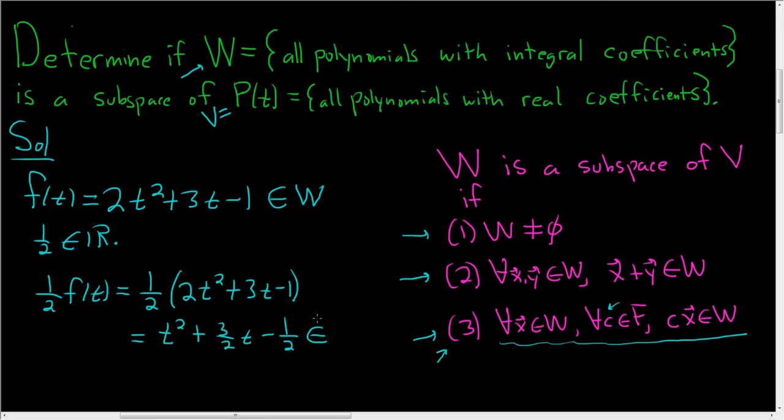And this is not in W. The reason is that 3/2 and -1/2 are not integers. So we violated condition 3, and this is not a subspace of V, which in this case is P[t]. The answer is no, it is not a subspace.